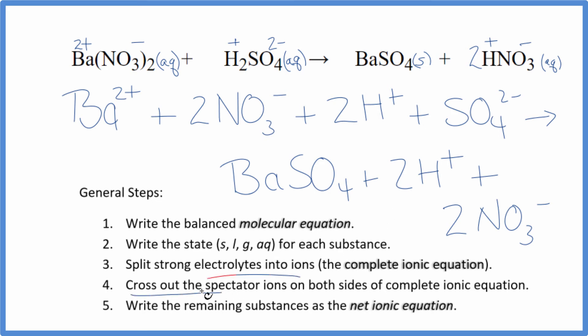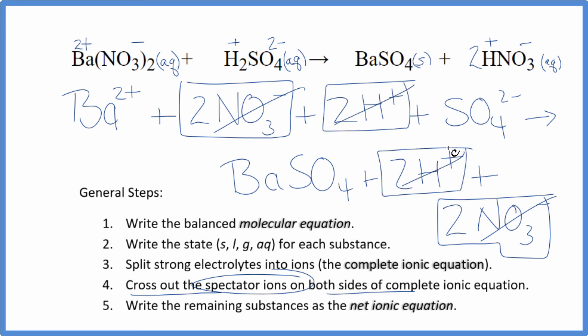Now we can cross out spectator ions. They're on both sides. So in the reactants here, I see there are 2 nitrates right here, and in the products, 2 nitrates. 2 hydrogen ions, and then again in the products, 2 hydrogen ions. What's left, that's the net ionic equation for barium nitrate plus sulfuric acid.